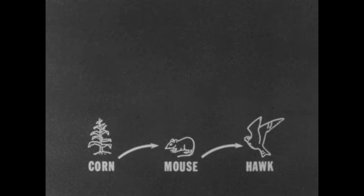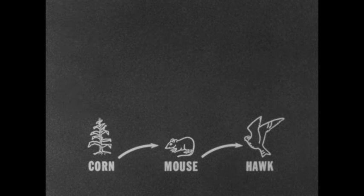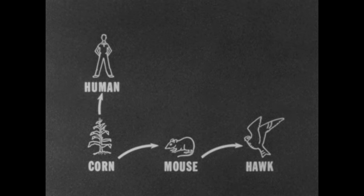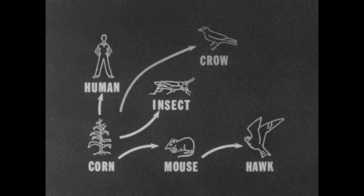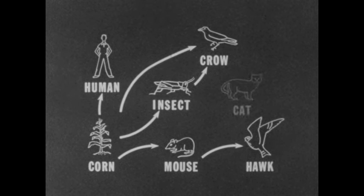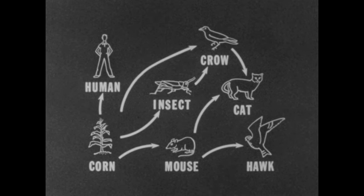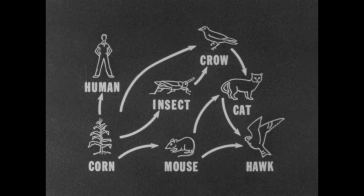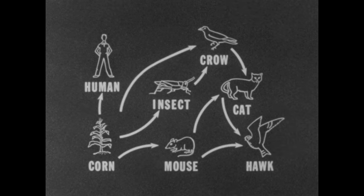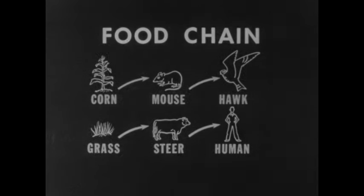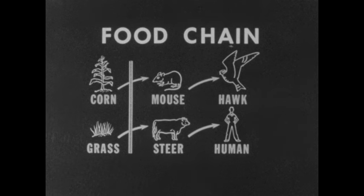Remember, though, that this food chain, like all the others we've seen, could be made up of many other links. For example, the corn could have provided food for a human, or an insect, or a crow. Or the crow might eat the insect, and a cat might eat either the crow or the mouse, and the hawk might eat the cat. But no matter what the links in a particular food chain, or the direction it takes, most food chains involve green plants and enriched soil.